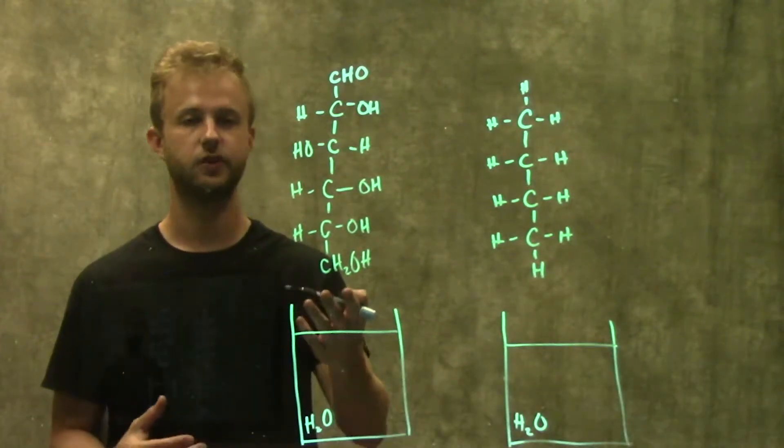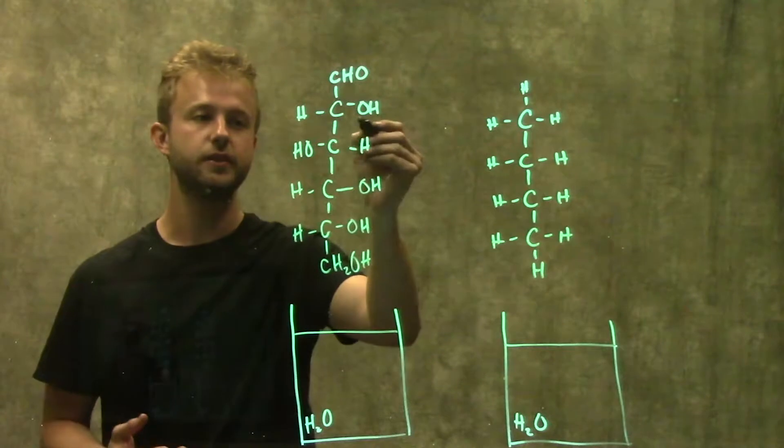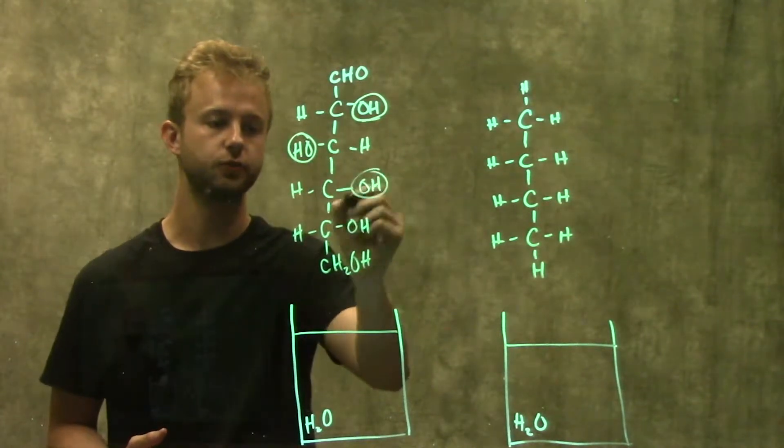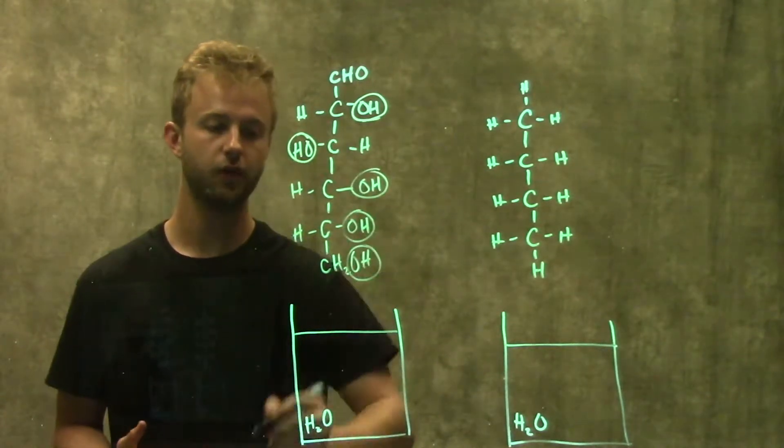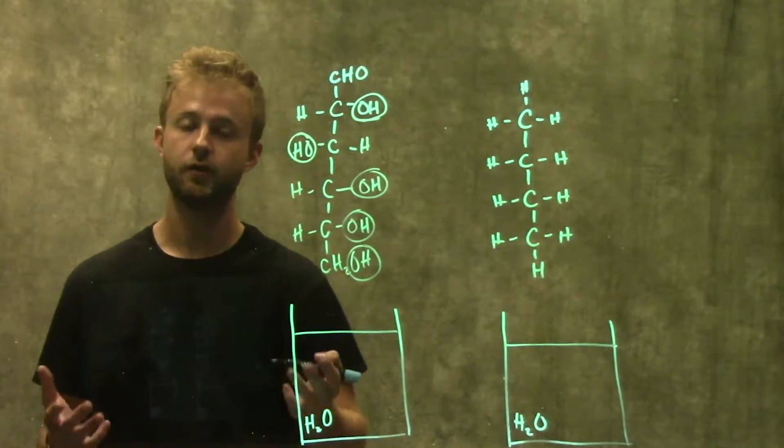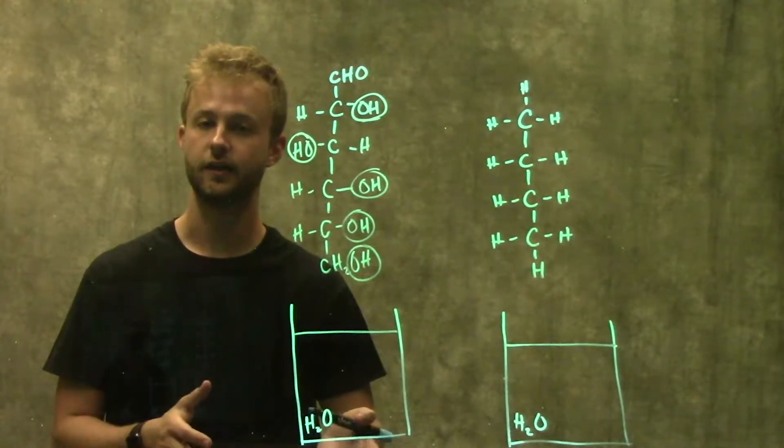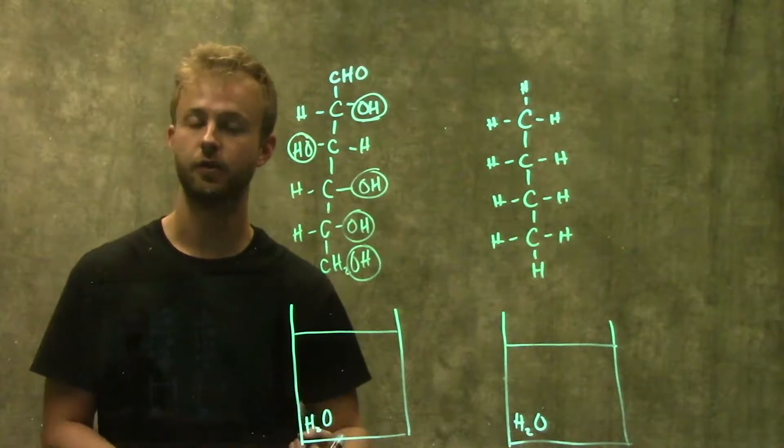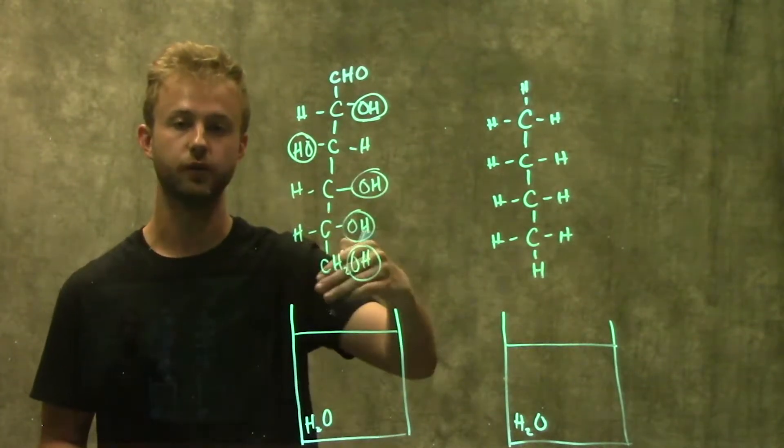So what makes this molecule hydrophilic? That's going to be these oxygen and hydrogen groups that are distributed all throughout the molecule because we know that the bond between an oxygen and a hydrogen atom is a polar covalent bond which makes this molecule polar.